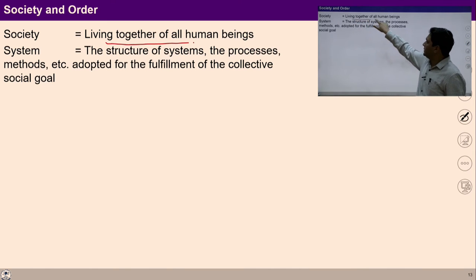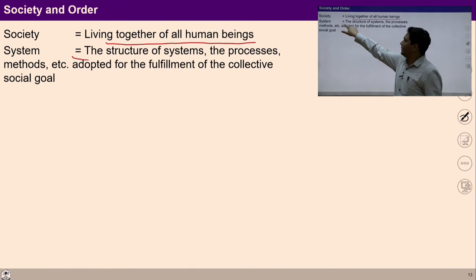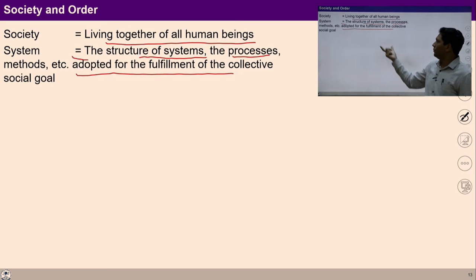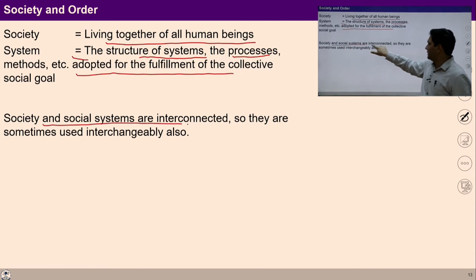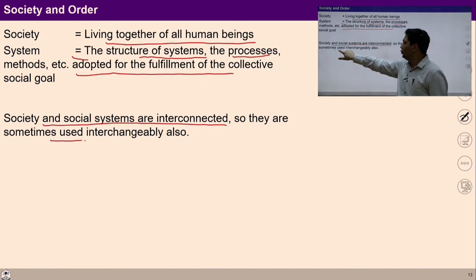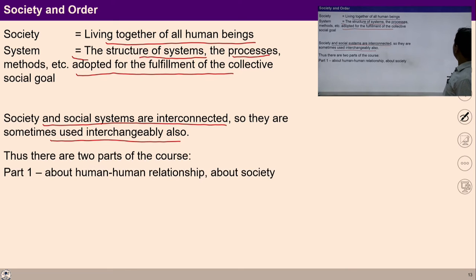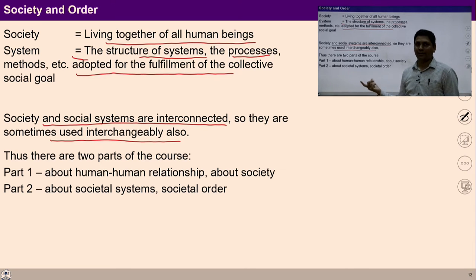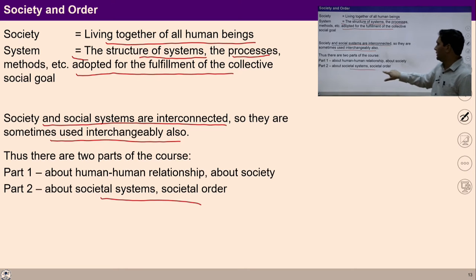When I say society, it means people living together with a common goal. When I say system, it means the structure, process, and methods adopted for the fulfillment of collective social goals. Society and social systems are interconnected and during the course these two words are used interchangeably. So there are two parts: one talks about human-human relationship and another about social system and social order.